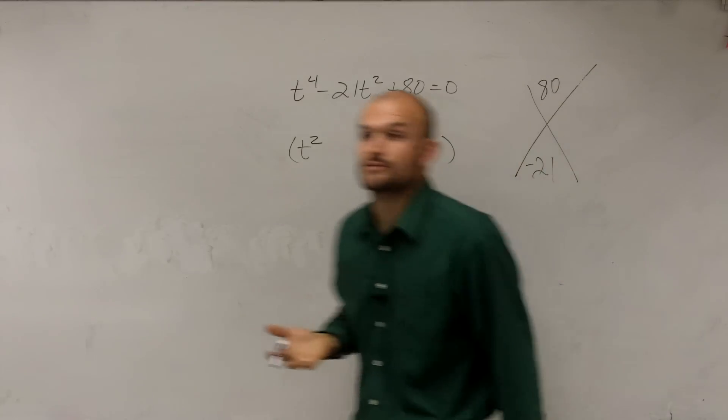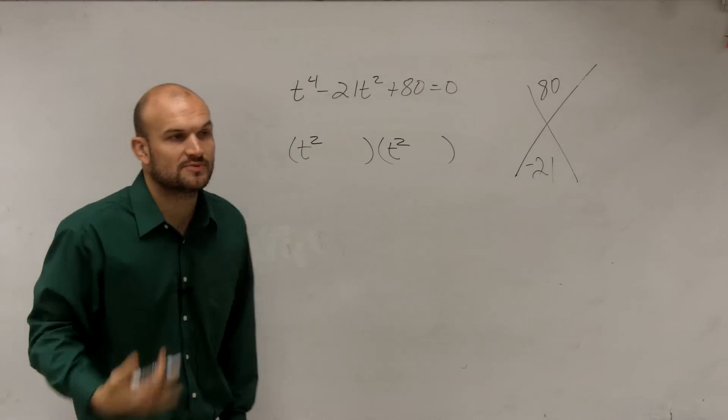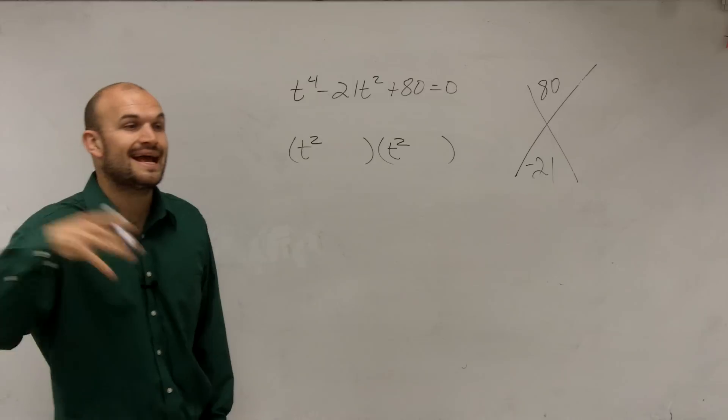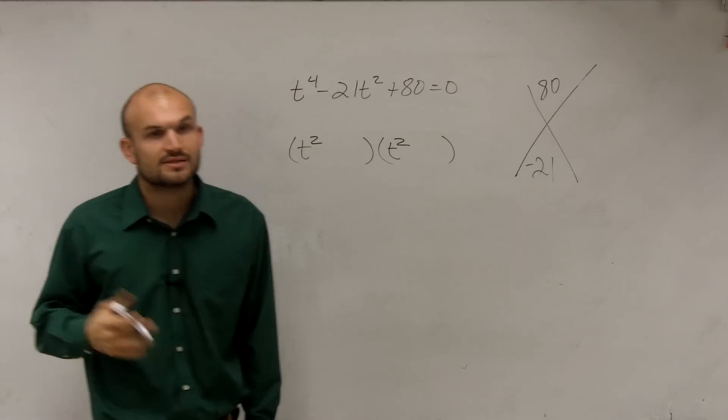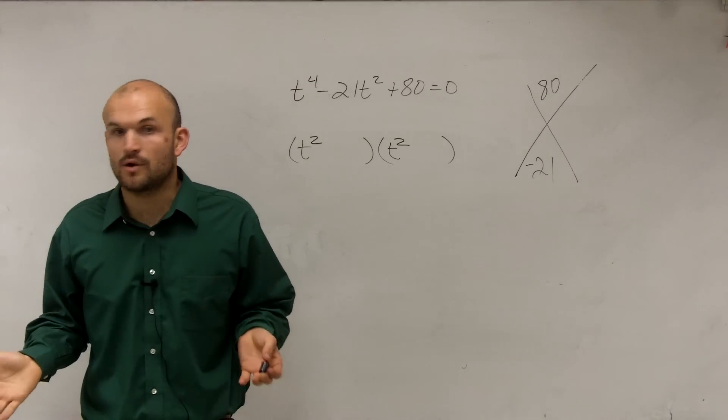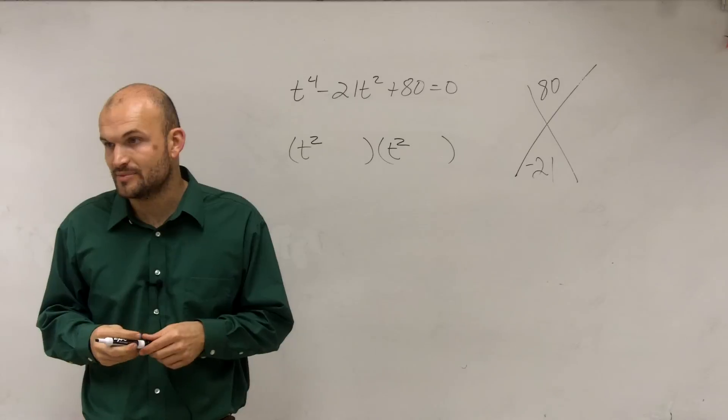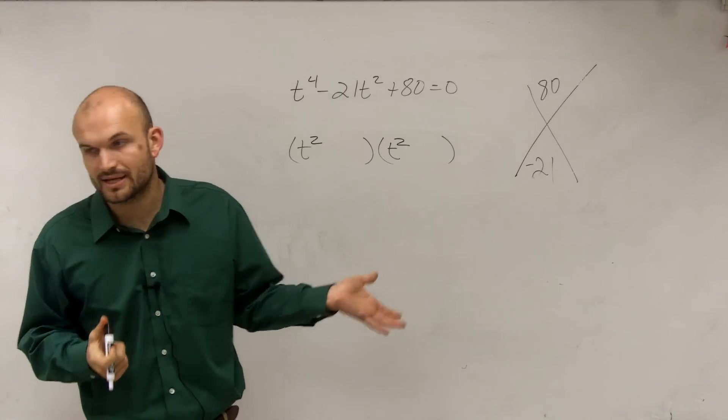So now what we're going to do is we're going to look at this and say, what two numbers multiply to give you positive 80 but then add to give you a negative 21? Since they're going to add to give us a negative 21, we know they're both going to have to be negative, because they multiply to give us a positive number.